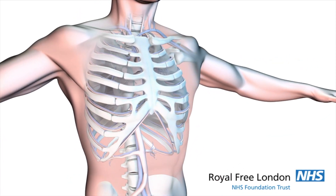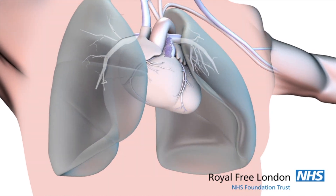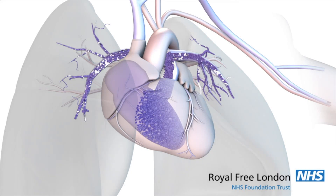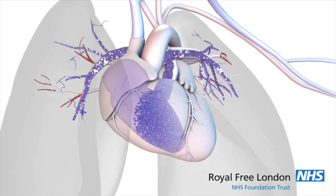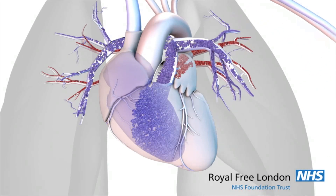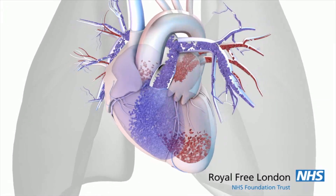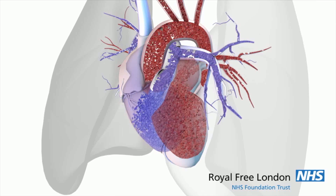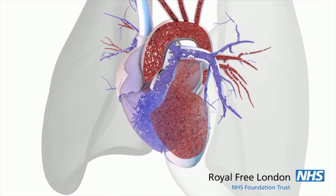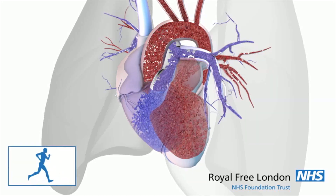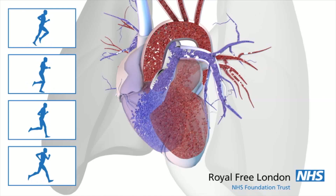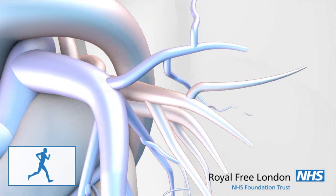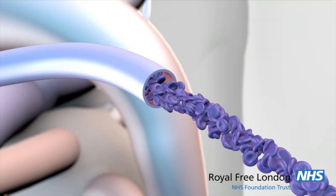In a healthy person blood travels through the pulmonary arteries from the right hand side of the heart, picking up oxygen when it reaches the lungs. That oxygen rich blood from the lungs returns to the left hand side of the heart and is pumped around the body to the muscles where oxygen is needed. During exercise the demand for oxygen increases so the heart beats quicker and the pulmonary arteries usually widen to let more blood flow through to the lungs.